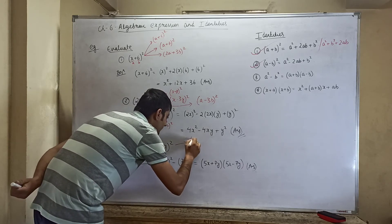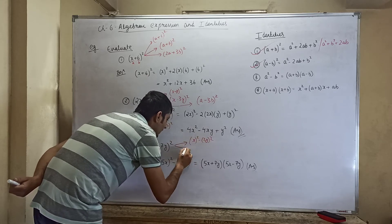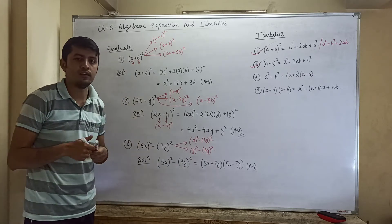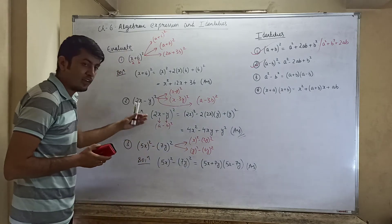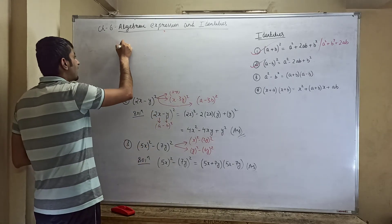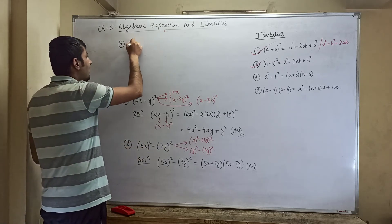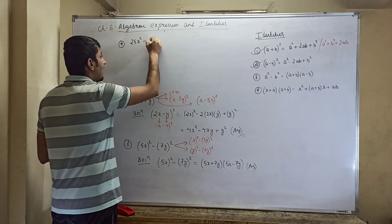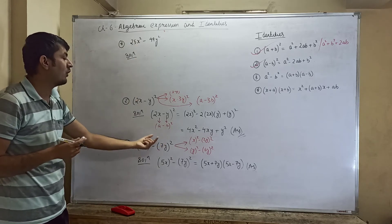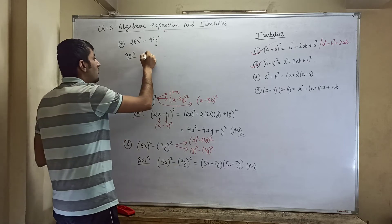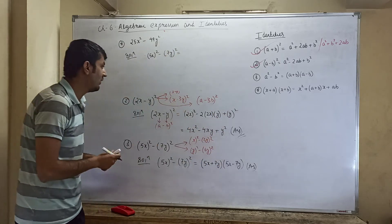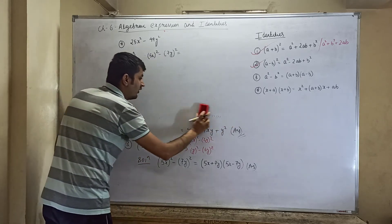They can give you x² minus (2y)² or y² minus (6y)². Sometimes they slightly change the question. For example, suppose they give you 25x² minus 49y². Here, 25x² is (5x)² and 49y² is (7y)², so you rewrite it as (5x)² minus (7y)² and then apply the third identity the same way to get (5x + 7y)(5x − 7y).